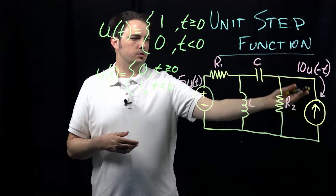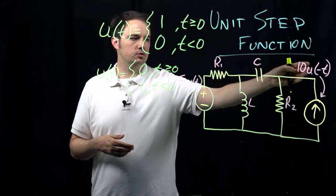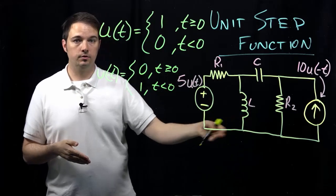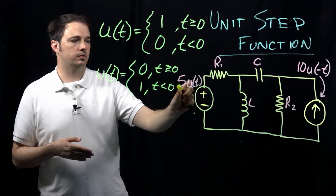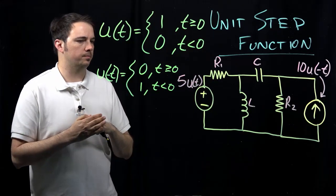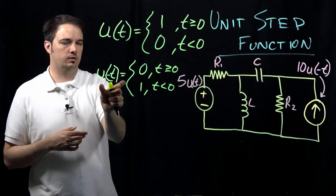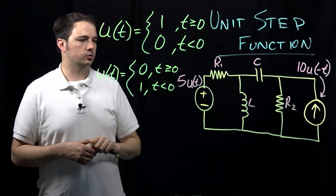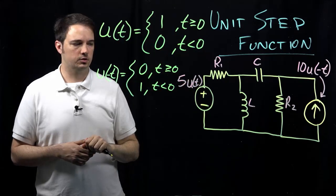For the current source with u(-t): at time less than 0, u(-t) equals 1, so the current source is 1 times 10 — that's 10 amps. For any time t less than 0, that current source is active, supplying current to the rest of the circuit, while this voltage source is turned off. But once we reach t equals 0, the current source goes to 0 due to the inverse function, meaning no current from the current source, whereas the voltage source becomes 5 times 1 — just 5 volts.